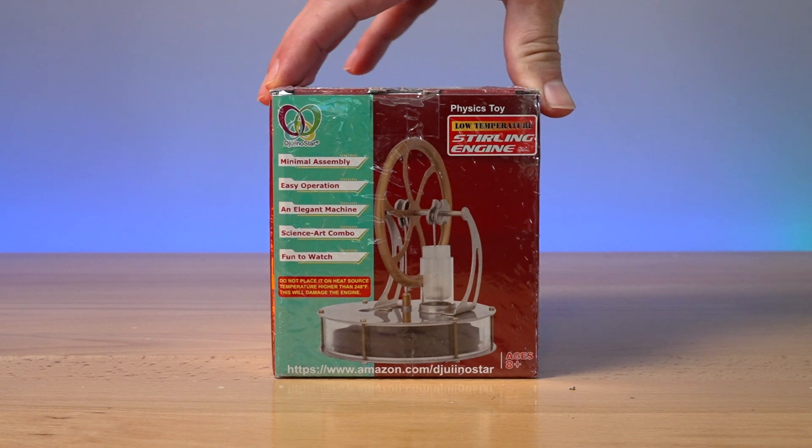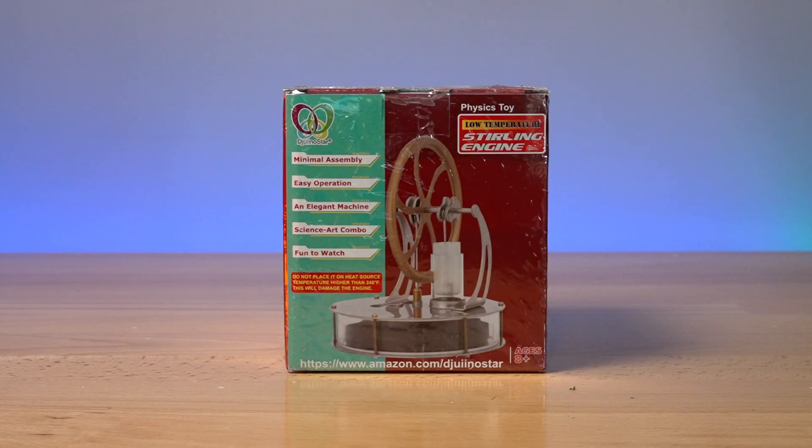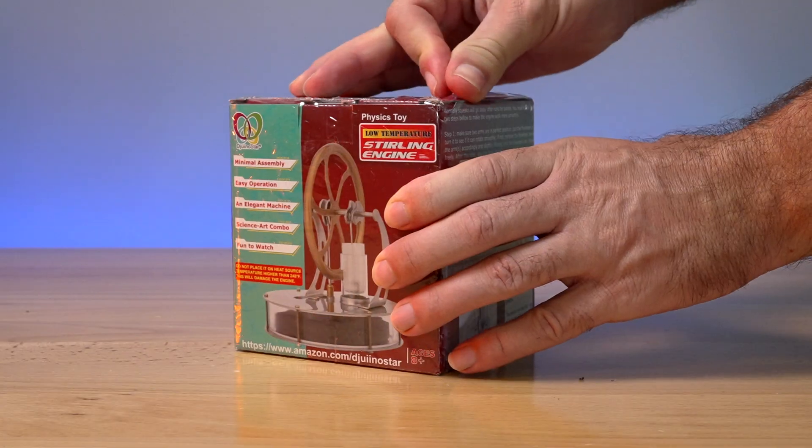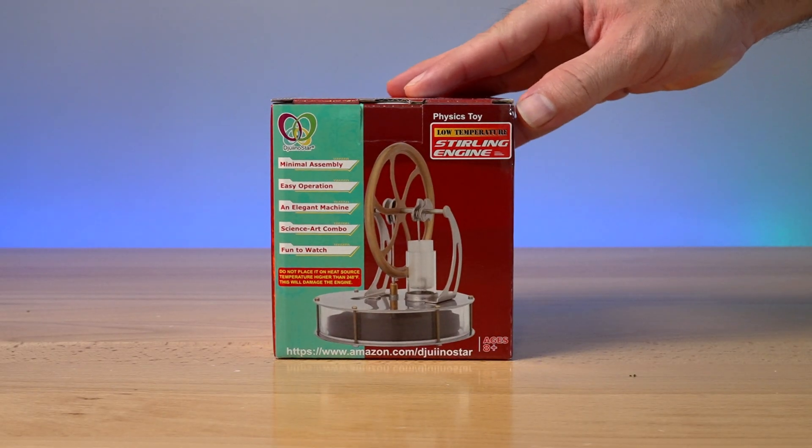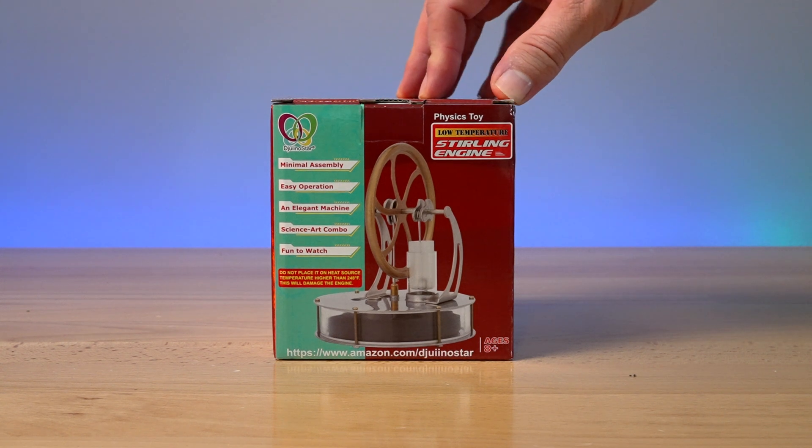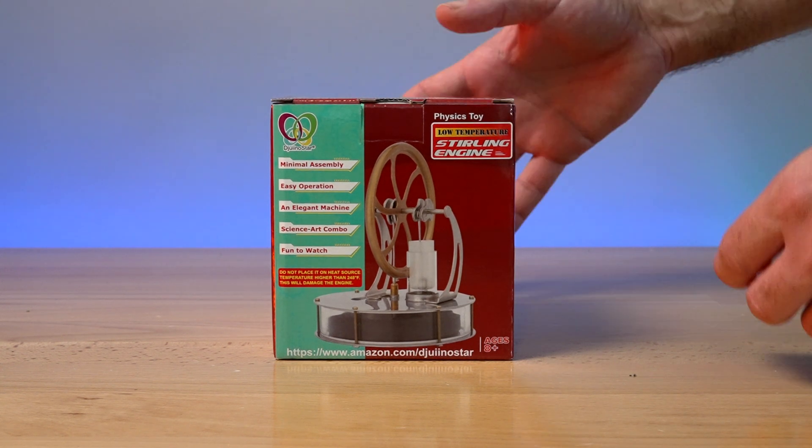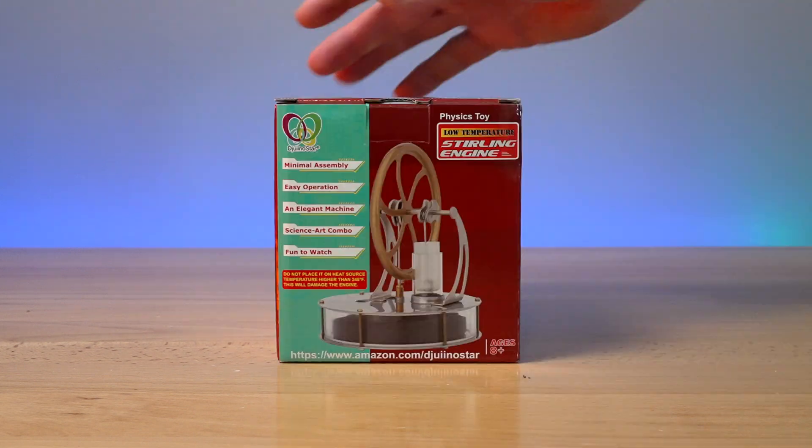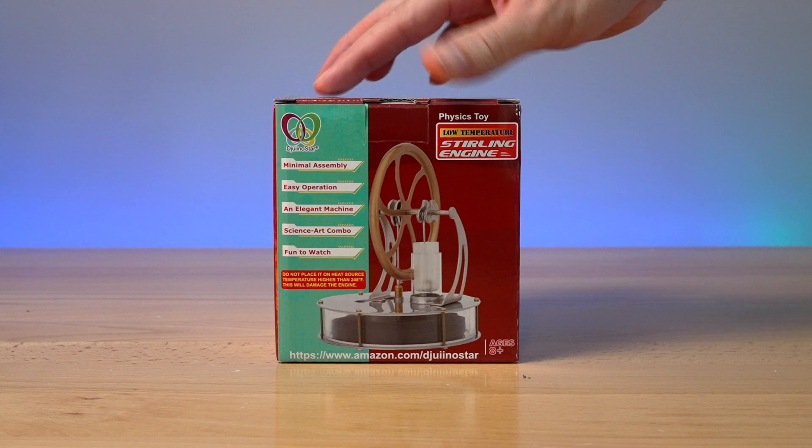Alright guys, so this is a pretty interesting little toy here, but let's go ahead and take off the plastic. So this is how it comes, and I got this one on Amazon. They're not very expensive for what they are, and this one's made by a company called Juno Star. They seem to have pretty good reviews and quality product here. So the box is not too big. You guys can see it's actually on the smaller side. Let's go ahead and see what it says here about the engine.